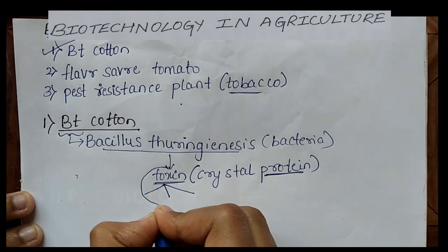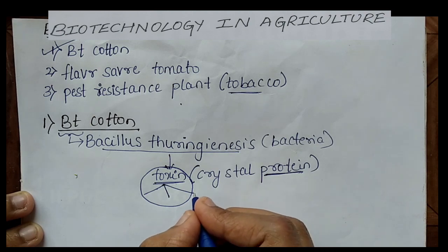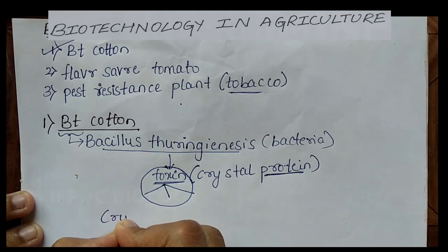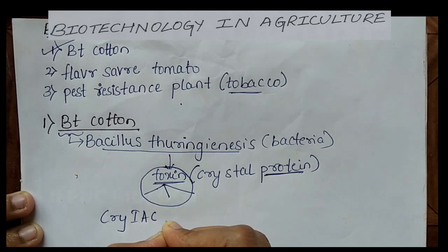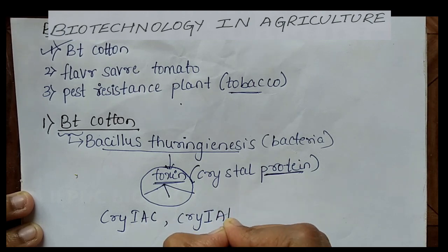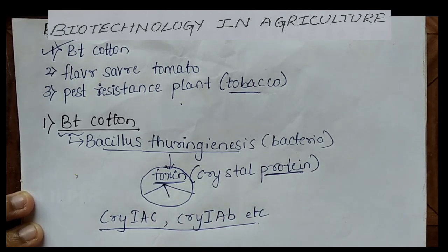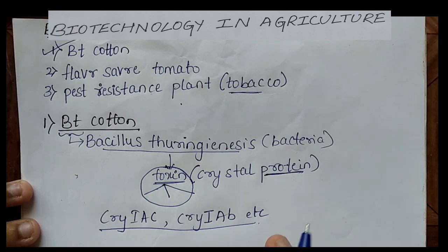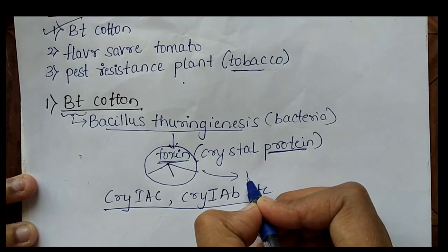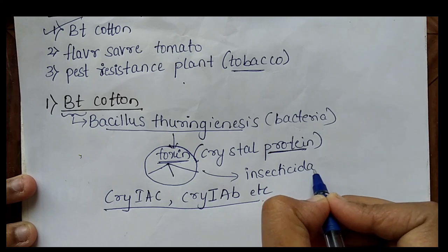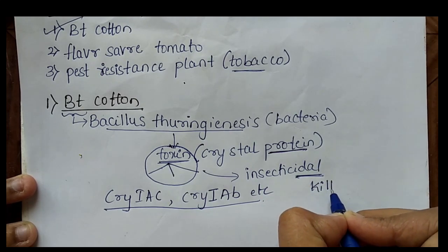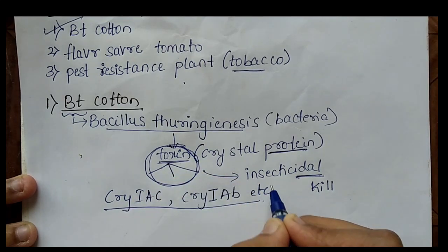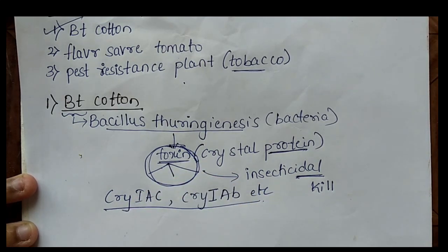The varieties of toxins produced include cry1Ac, cry1Ab, and others. These are the variety of toxins produced by Bacillus thuringiensis, and they have the capacity to kill different varieties of insects. Hence this toxin is called insecticidal — 'cidal' refers to kill — meaning this toxin has the capacity to kill insects.